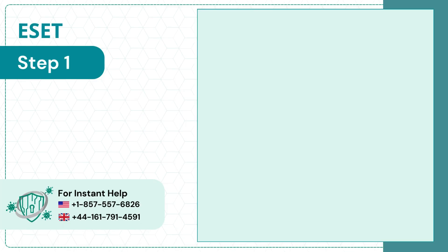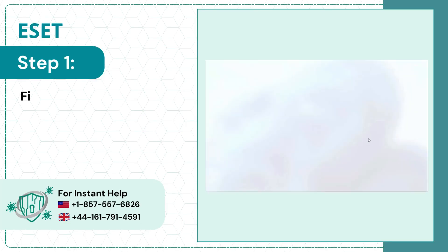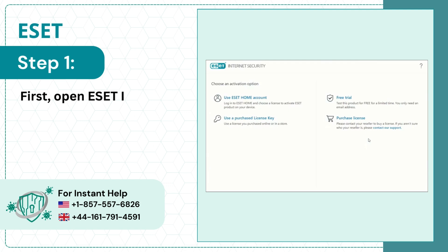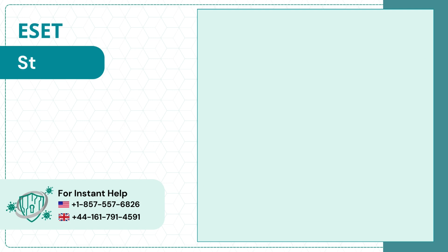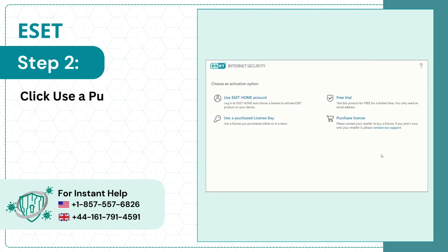Step 1: Open ESET Internet Security and navigate to the choose an activation option screen. Step 2: Click 'Use a Purchased License Key.'